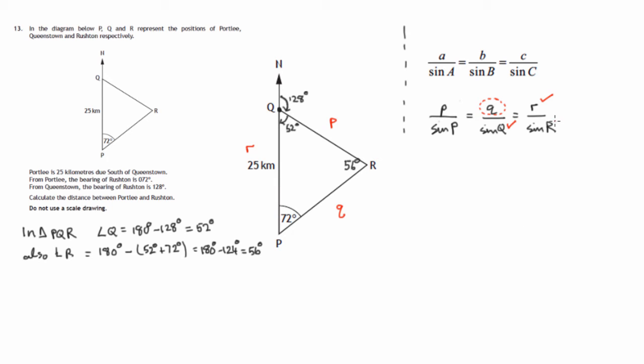So we do now know angle R. We don't need to use this part of the sine rule. We'll use this part. So we'll now use the sine rule in the form Q over sine Q equals R over sine R.